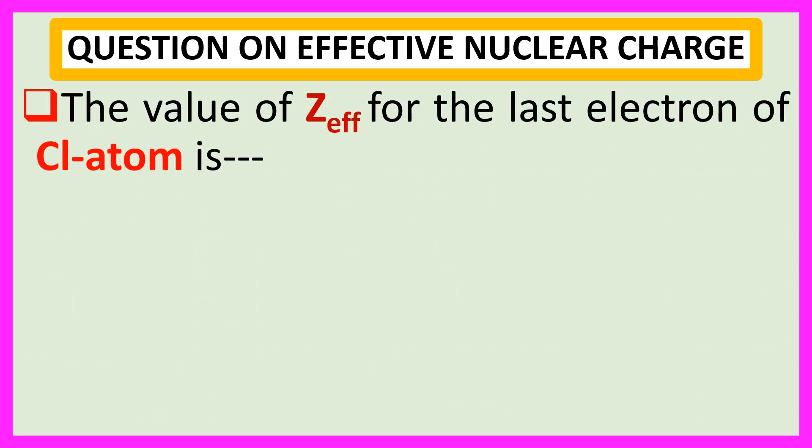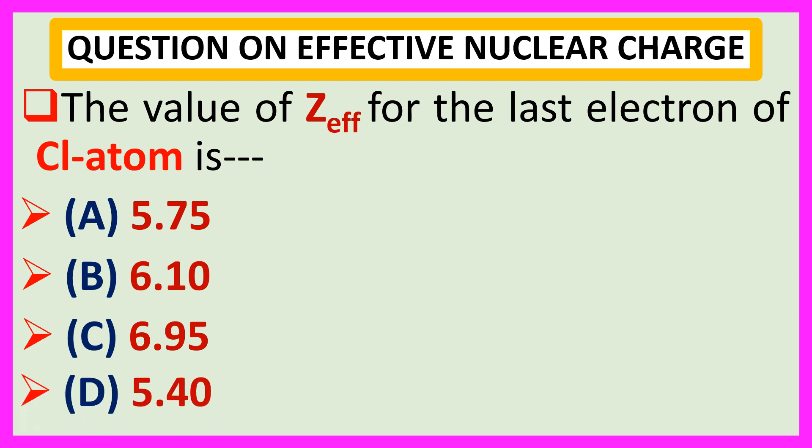The value of Z effective for the last electron of chlorine atom is - Choices are A 5.75, B 6.10, C 6.95, and D 5.40.